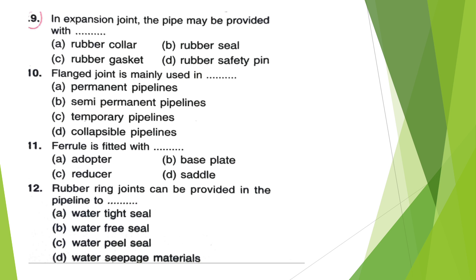In expansion joint, the pipe may be provided with — Rubber Seal, Rubber Gasket, or Rubber Safety? The answer is option C — Rubber Gasket.